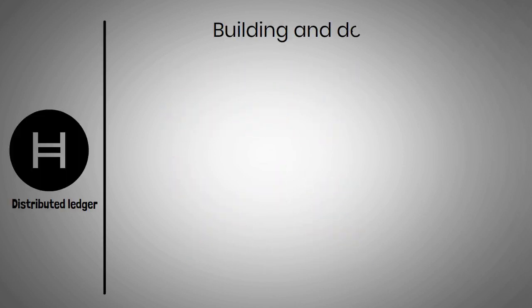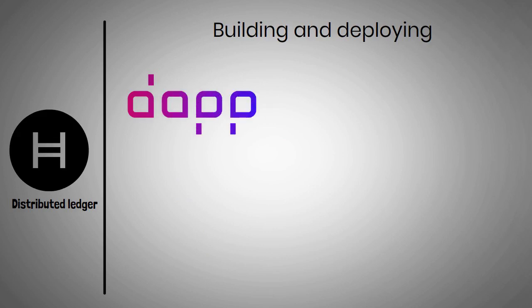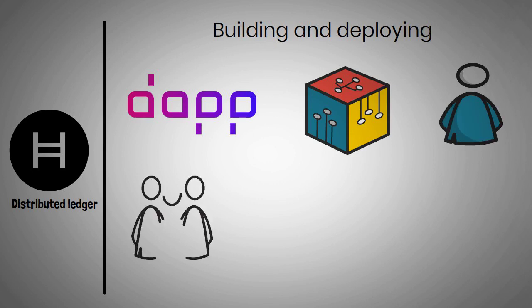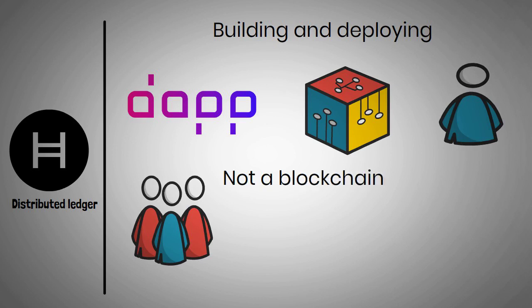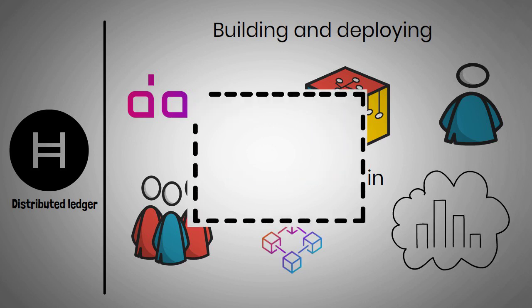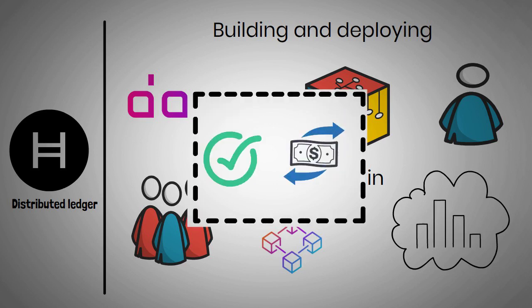Hedera is a public distributed ledger for building and deploying decentralized applications and microservices. Hedera-powered apps can be built and run by anyone, from a single developer to a startup, a small corporation, or an enterprise company. Hashgraph is not a blockchain in the sense that it's built on a chain of blocks — it's best to imagine it as a graph, whereby the speed of verifying transactions increases as more transactions are added to the network.